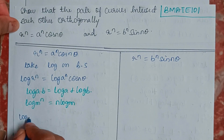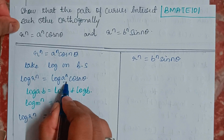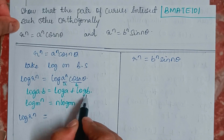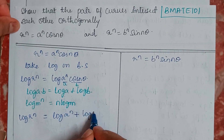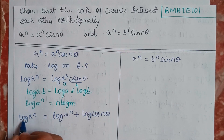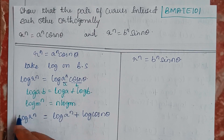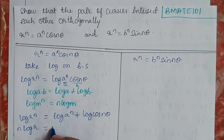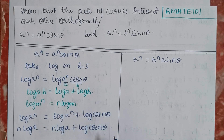For the first curve, taking log on both sides: log(r^n) equals log(a^n · cos(nθ)). Expanding using the log product rule, this becomes log(a^n) plus log(cos(nθ)), and further expanding gives n·log r equals n·log a plus log(cos(nθ)).